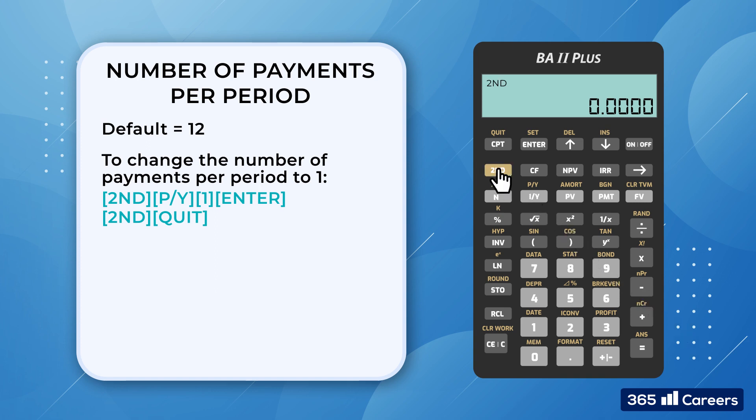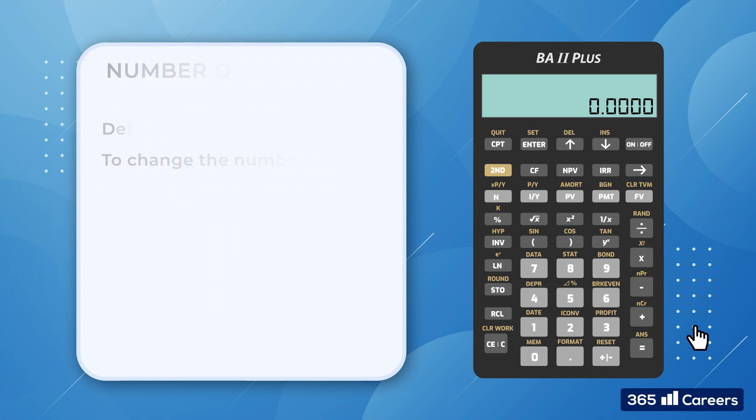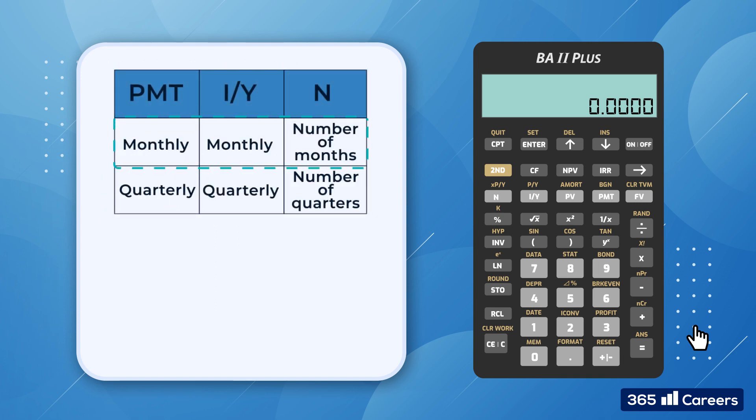2nd, PY, 1, ENTER, 2nd, QUIT. Excellent! Now, if we have a monthly payment, we'll use the monthly interest rate, and N will be the number of months. If it's a quarterly payment, we'll use a quarterly interest rate, and N will be the number of quarters, and so on.